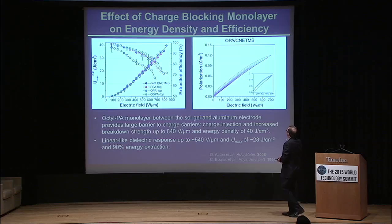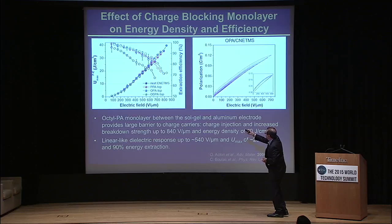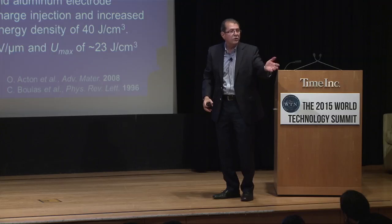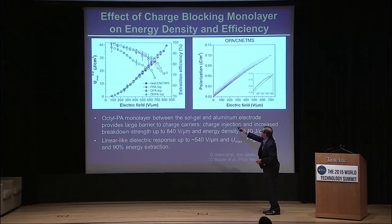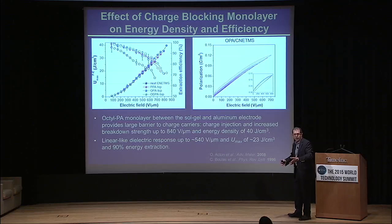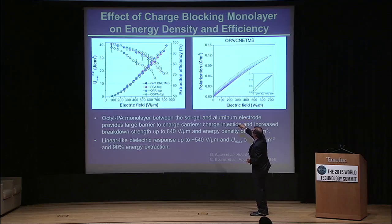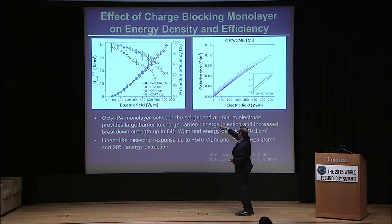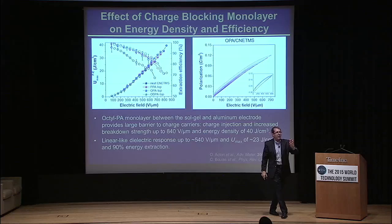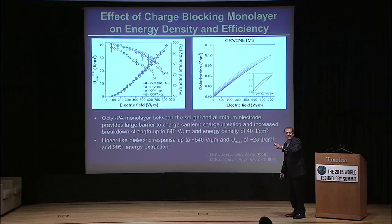We do measurements of these things and the energy densities. I mentioned before about the commercial standard being 2 to 3 joules per cubic centimeter. With these materials, we've been able to achieve energy density — if you look at the solid blue curves that go all the way up to 40, that's 40 joules per cubic centimeter of energy storage. And when we look at the energy extraction efficiency, if we go to a field of about 550 on the horizontal axis, we end up getting about 90% energy extraction efficiency, which at these high energy densities is unprecedented according to what we know.